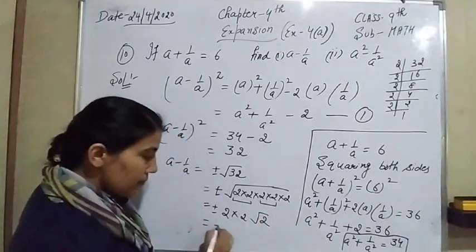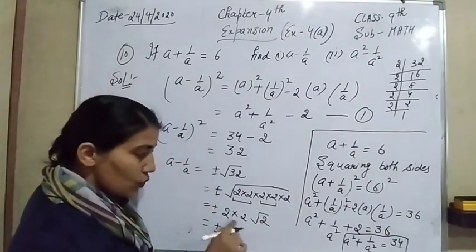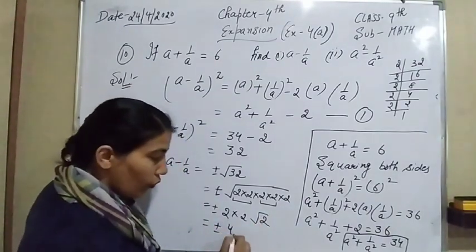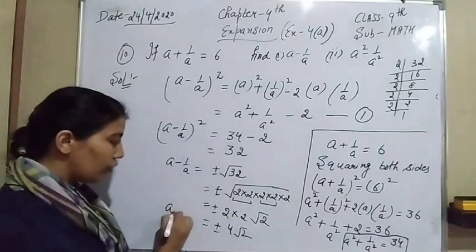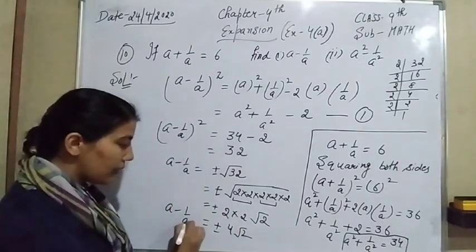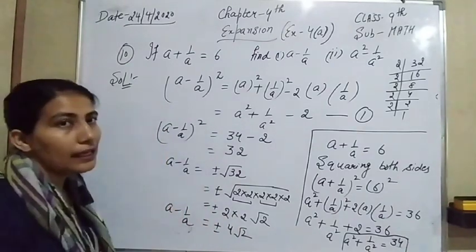That means plus minus 2 twos are 4 and root 2. So A minus 1 over A equals plus minus 4 root 2. That is the value of A minus 1 over A.